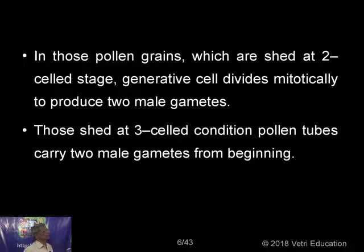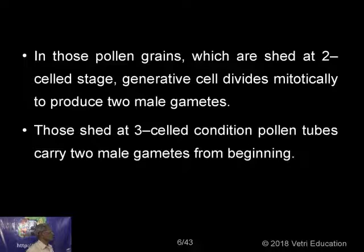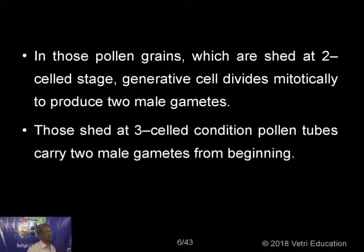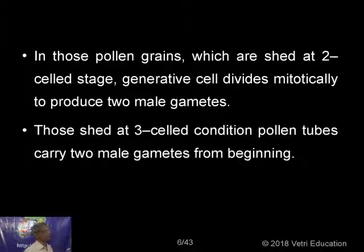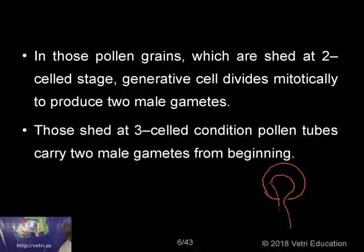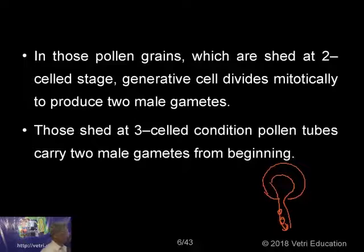In pollen grains shed at the two-celled stage, the generative cell divides mitotically to produce two male gametes. Those shed at the three-celled condition carry two male gametes from the beginning. It depends upon how many nuclei are already in the pollen at the time of dehiscence. If the pollen grain contains two nuclei at dehiscence, it will divide to become three. If it is already in a three-nucleated condition, no division takes place — that mitosis is skipped.